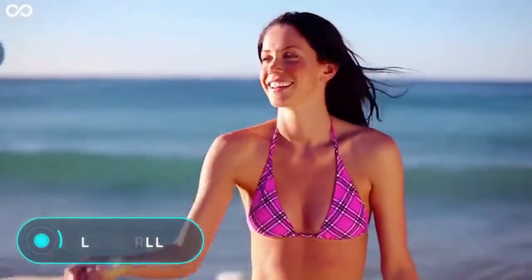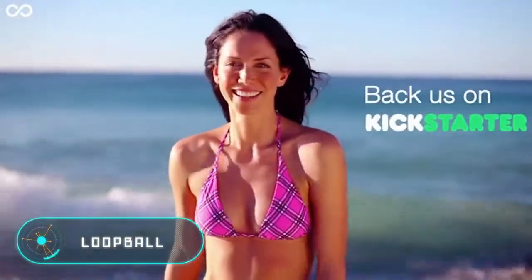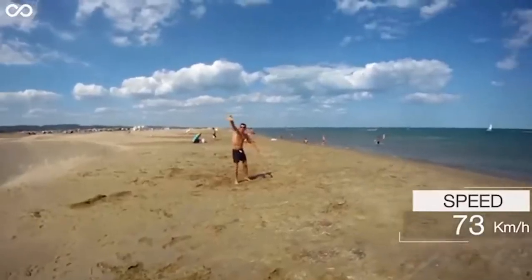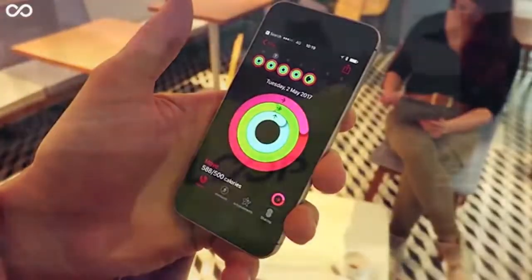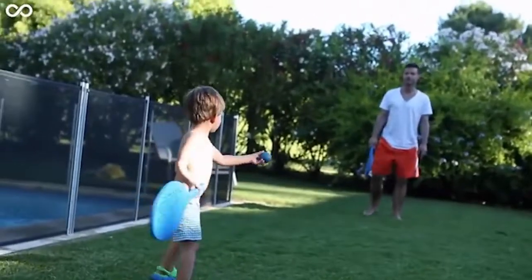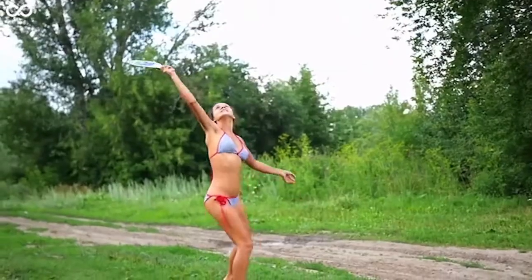Loop Ball. This beach ball is the first intelligent ball in the world. The ball records the distance between the players and the speed of the serve and records the results in an application via Bluetooth. With this ball you can beat your records by playing anywhere at any time.